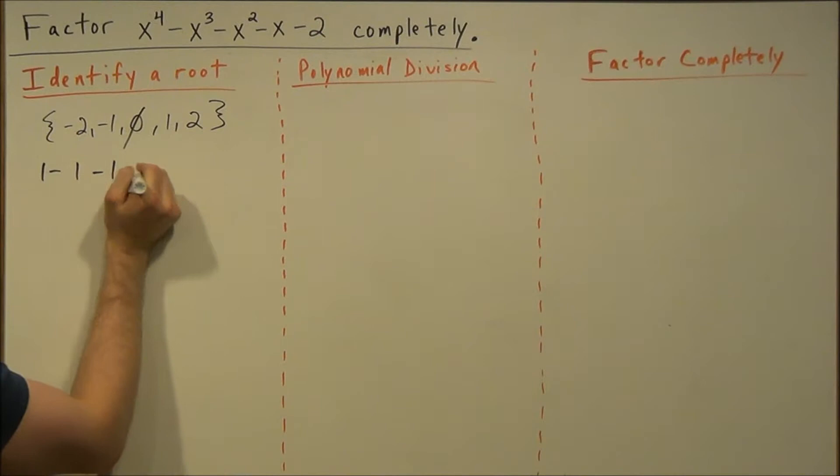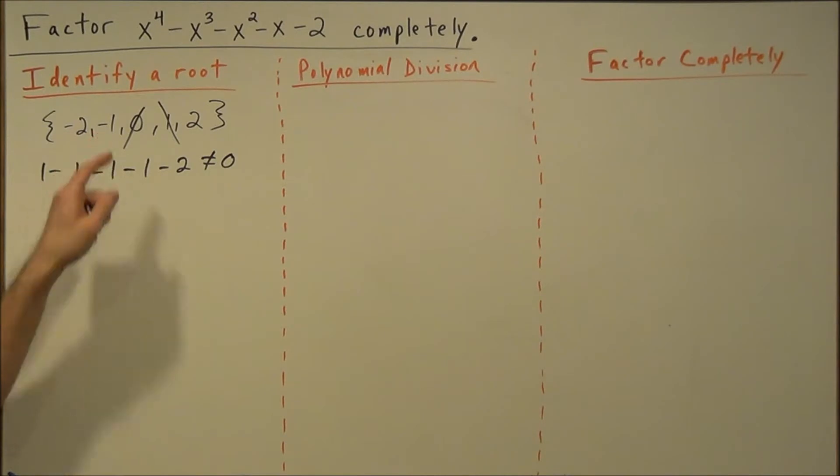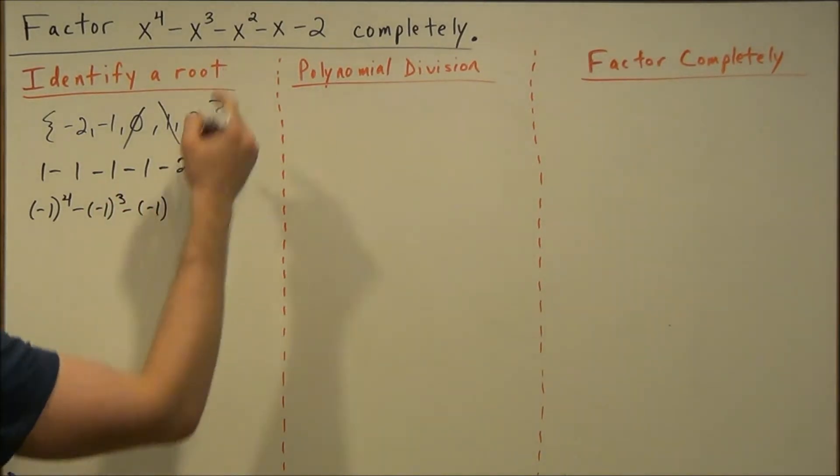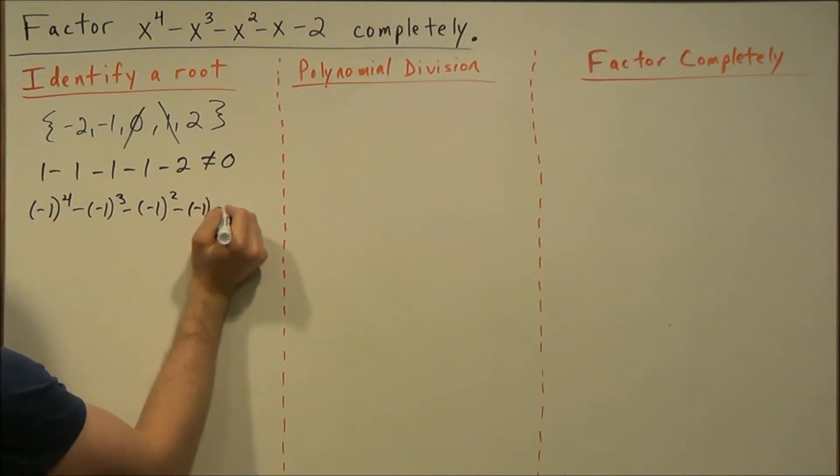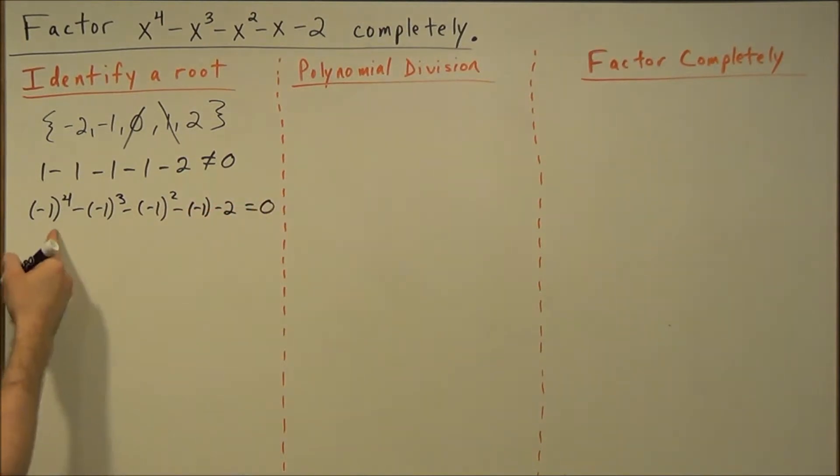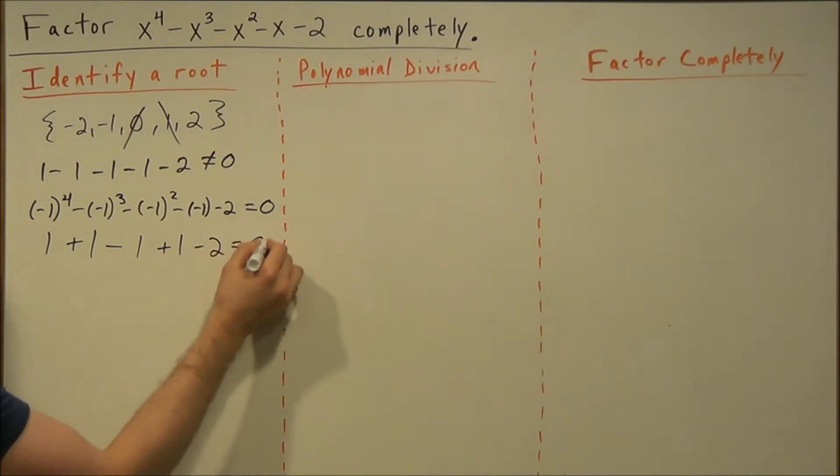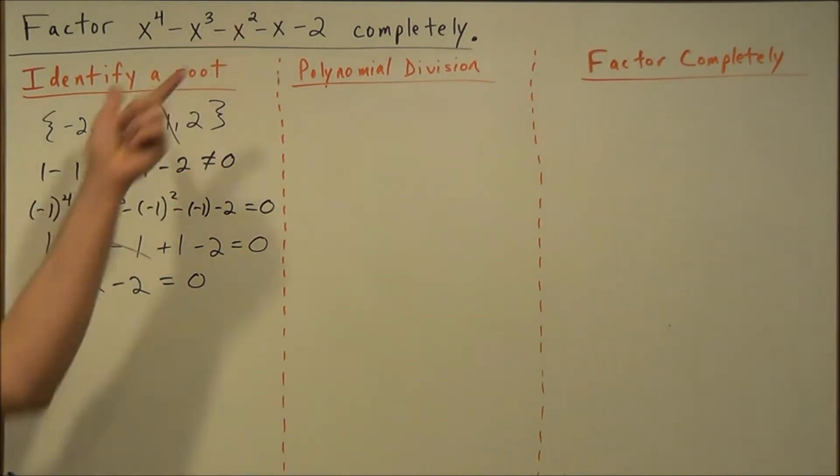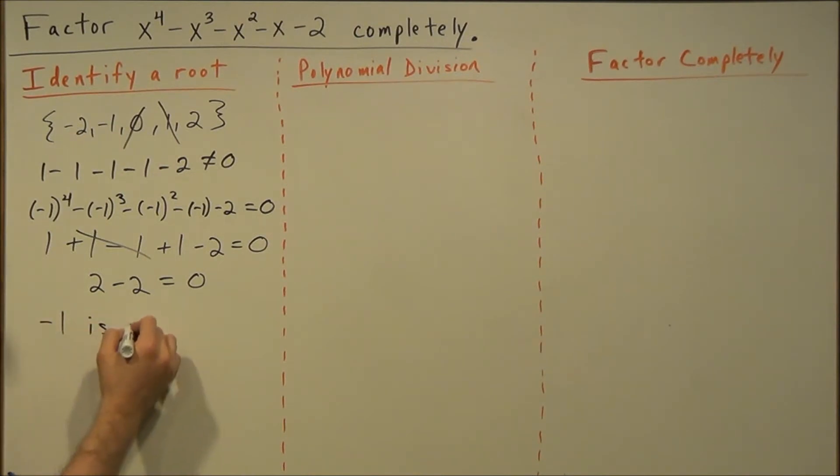When we try out negative 1 though, we plug in and parentheses are important when you're plugging in a negative. So we plug in negative 1 into the expression here and check to see if it equals 0. The first part is going to give us 1, minus negative 1 changes to plus 1, minus 1 plus 1 minus 2. 1 minus 1 cancels, 1 plus 1 will give you 2 minus 2 equals 0. So this tells us if this were a function, negative 1 is a root.